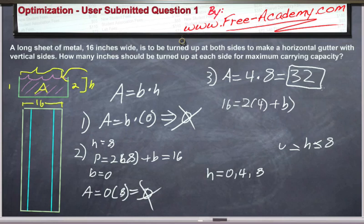So 32 inches squared is our maximum area from our critical points and our bounds. And that occurs when the height is equal to 4. So to answer the question, how many inches should be turned up on each side? You should turn up 4 on each side, leaving 8 at the base. And that solves our question completely. Thank you.